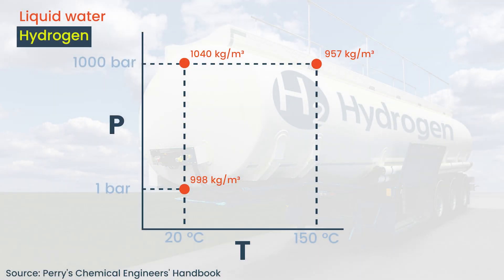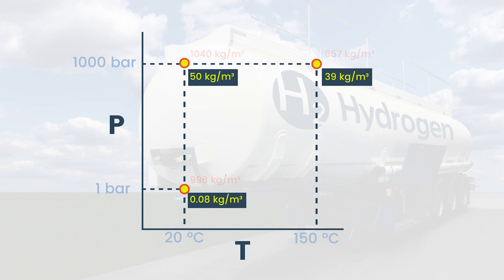At 20 celsius and one bar absolute pressure, if you had one cubic meter of hydrogen you would have just 80 grams of hydrogen. If you had a cubic meter of the stuff but instead it was at 1000 bar, you'd actually have 50 kilograms of hydrogen. If instead it was at 150 degrees, you'd only have 39 kilograms. The compressibility of gases is why working with volumes when it comes to gases is not as simple as it is in the case of liquids.